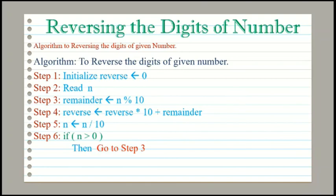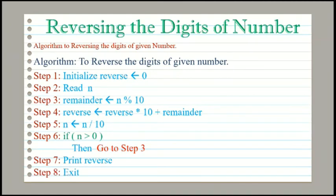When the condition n greater than 0 becomes false, we go to step 7. In step 7 we will print the output stored in reverse, so the statement will be: print reverse. So after initializing reverse to 0 in step 1, taking input in step 2, performing the reverse number calculation from steps 3 to 6, and then printing the result in step 7, we stop our algorithm in step 8. The statement for step 8 will be: exit.